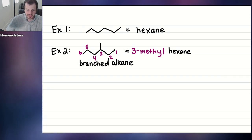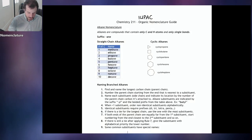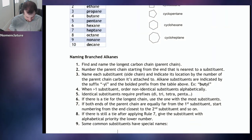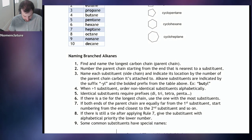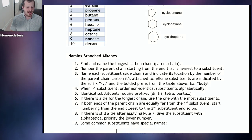We are done — no more naming needed. We don't need to follow the rest of the steps because we've completely named the compound. The other steps deal with more special scenarios: more than one substituent, identical substituents, or a tie for the longest chain. We only needed to go to step three to name this branched alkane.